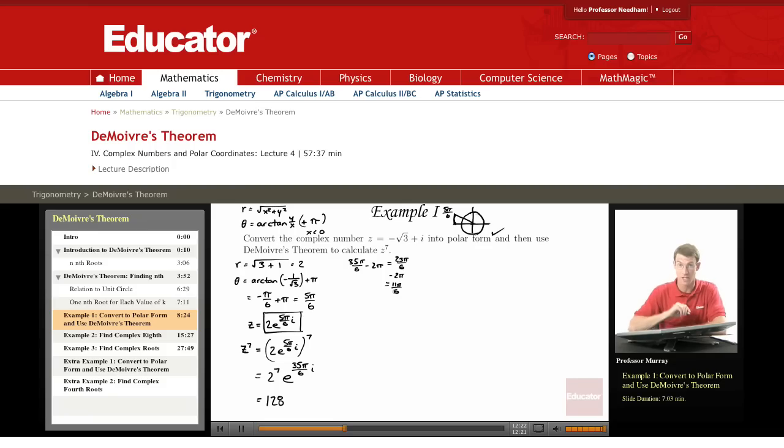That is in the range between 0 and 2 pi, so this is the same as e to the 11 pi over 6 i. Now I want to convert that into rectangular form, and it's very good to remember this formula: e to the i theta is cosine theta plus i sine theta. And you can also use x equals r cosine theta, y equals r sine theta, but I prefer the e to the i theta form.